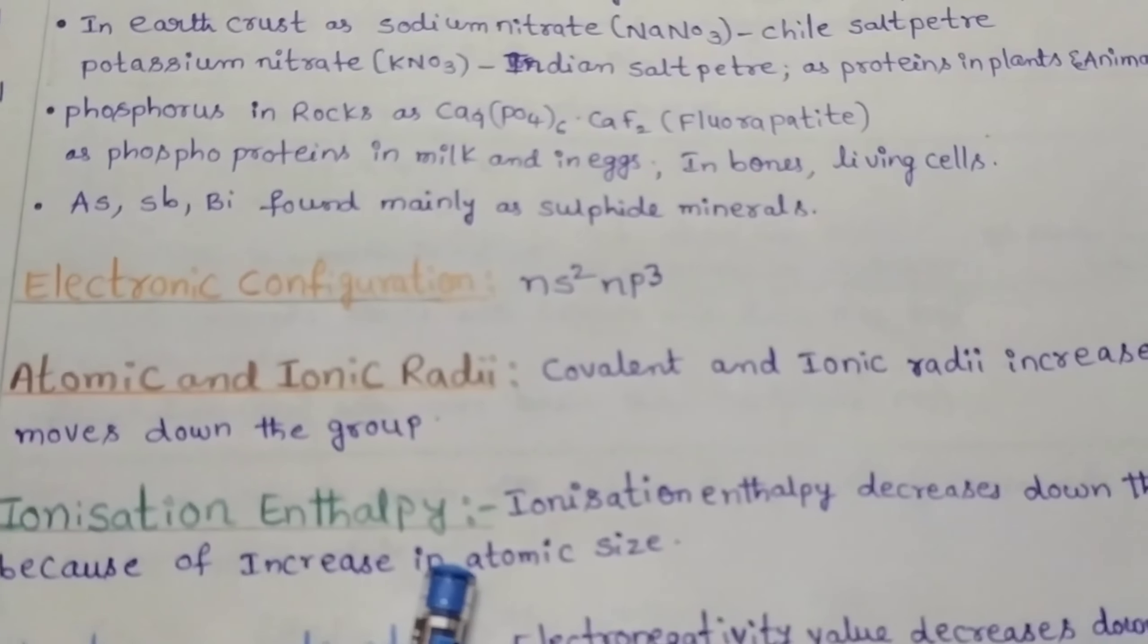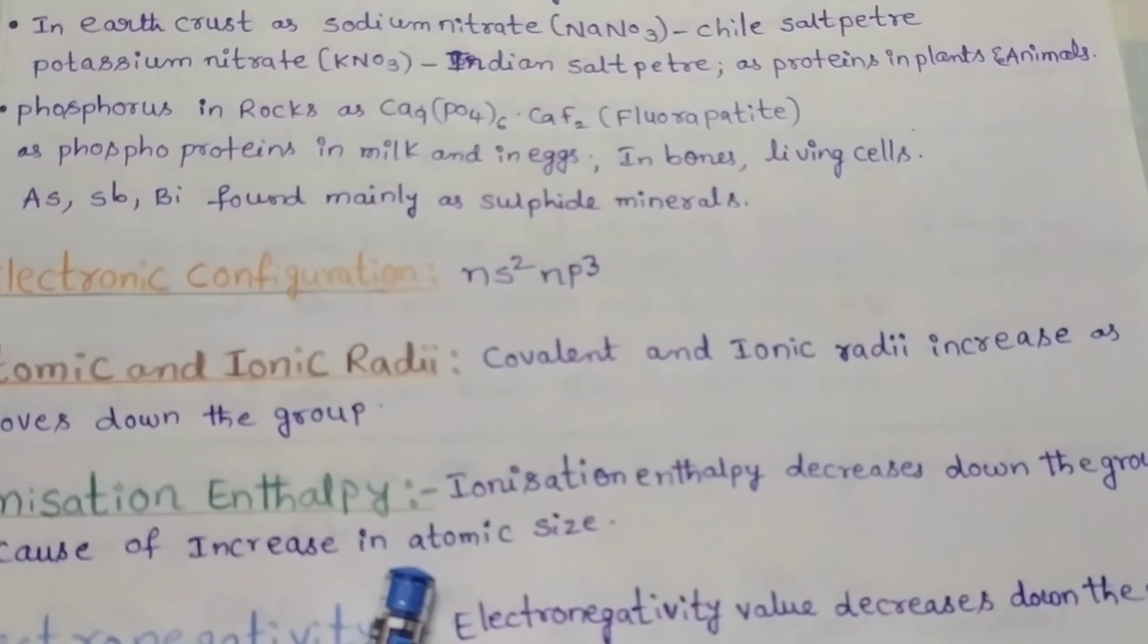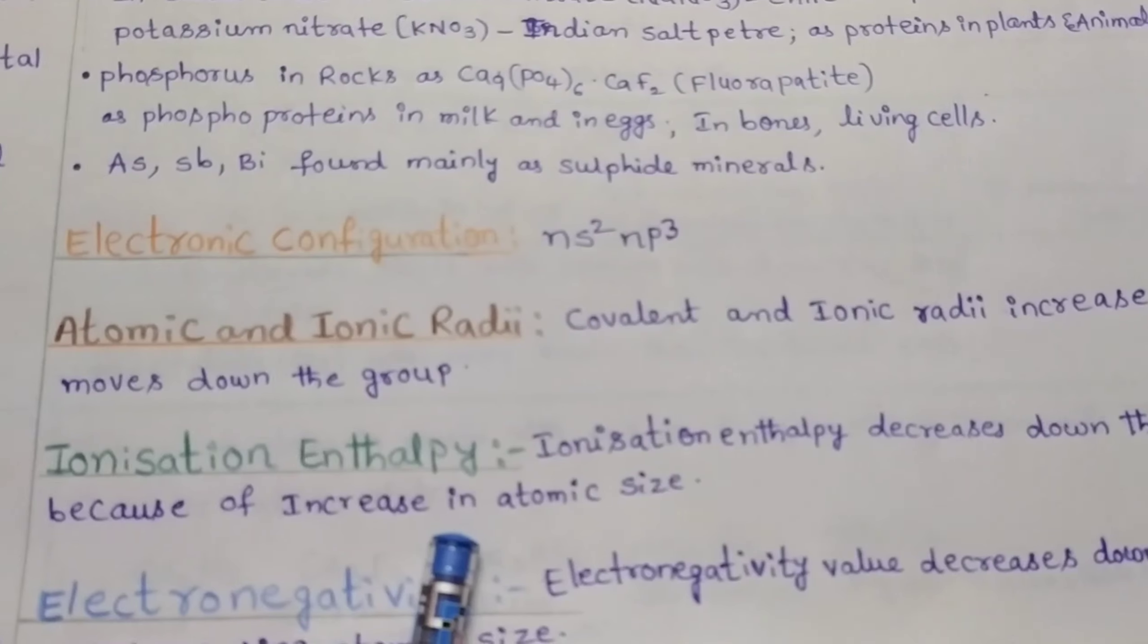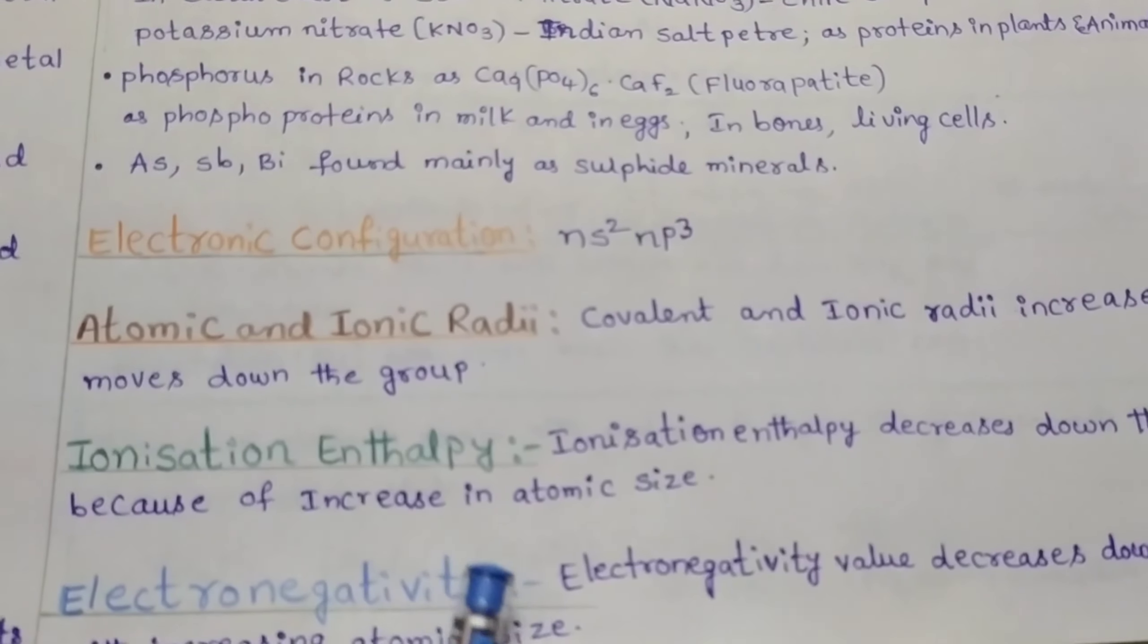Ionization enthalpy. Ionization enthalpy decreases down the group because of increasing atomic size.